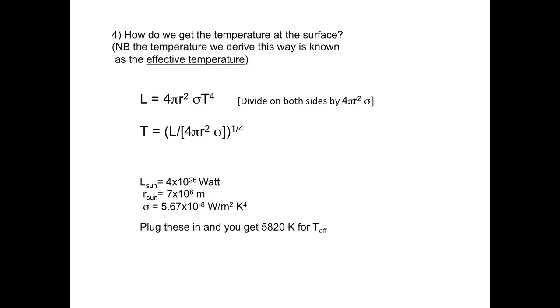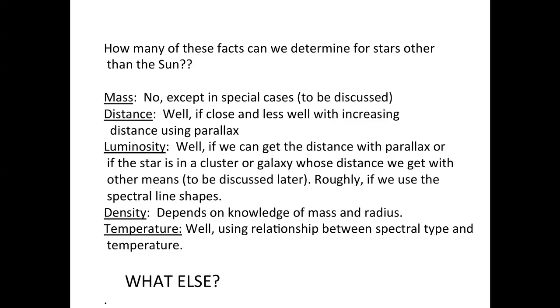That is, the temperature the sun would have if it were a perfect blackbody. Because it deviates slightly from this, when you measure the temperature in other ways, you get slightly different values. But this is the temperature of the sun taking its luminosity and its size and using the blackbody relation.